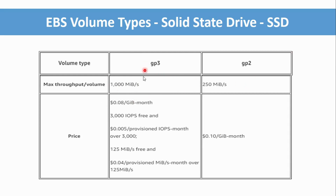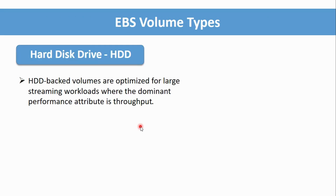GP3 offers better performance and lower cost compared to GP2, so you can go with the GP3 option. For more details on EBS volume types, you can search online. I'm covering the major points to keep the video concise.